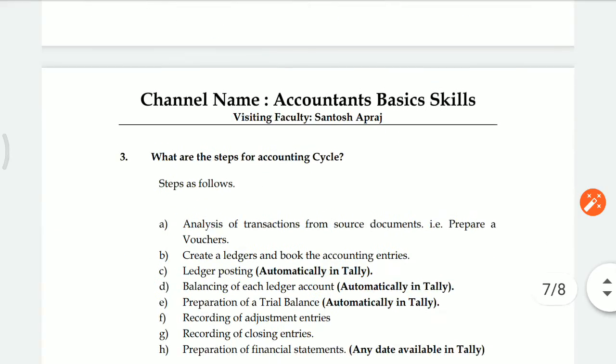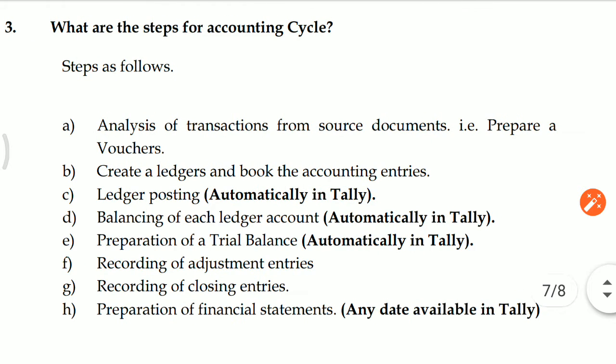Next: What are the steps of the Accounting Cycle? First, you have to book the source voucher. Second, create a ledger and book the accounting entry. Ledger posting is automatically done in Tally. Balancing of each ledger is automatically done in Tally. Preparation of trial balance is automatically done. Then comes recording of adjustment entries — any accounting software does not know how to book adjustment entries; based on your review of the trial balance, you have to book them. Then recording of closing entries based on last year's experience. Last is preparation of financial statements of any date.